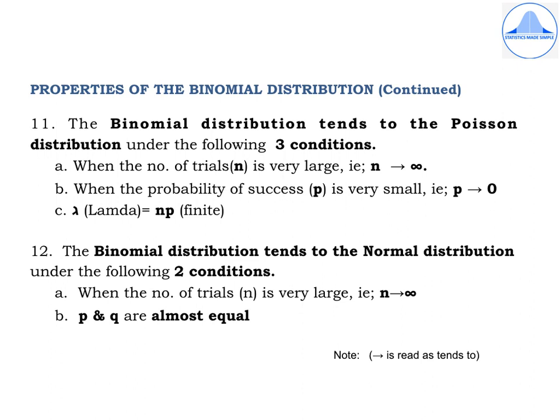The twelfth property: the binomial distribution tends to the normal distribution under two conditions. First, n tends to infinity. Second, P and Q are almost equal (i.e., probabilities of success and failure are nearly the same). When both conditions are satisfied, the binomial distribution tends to the normal distribution.